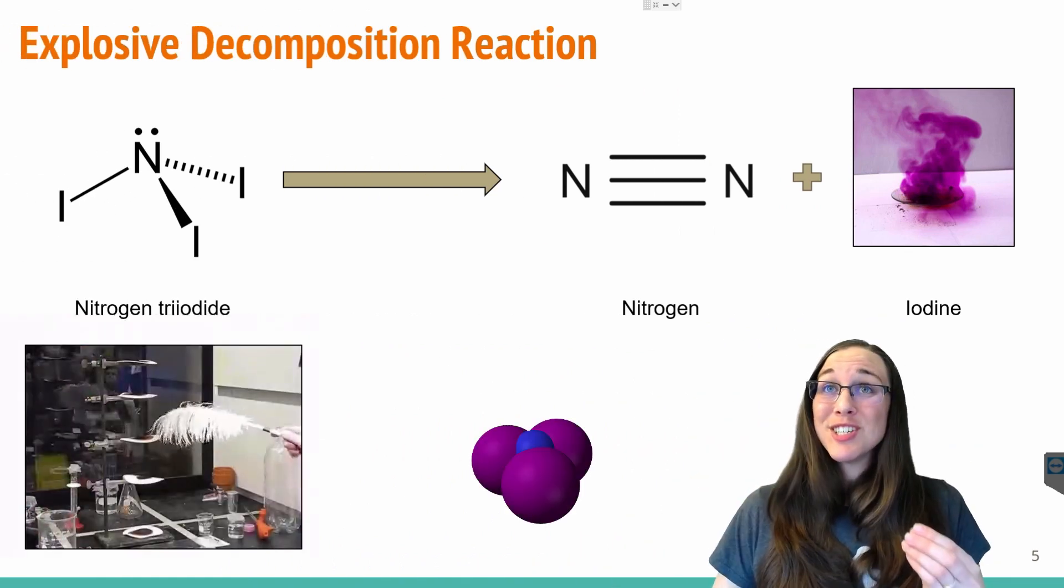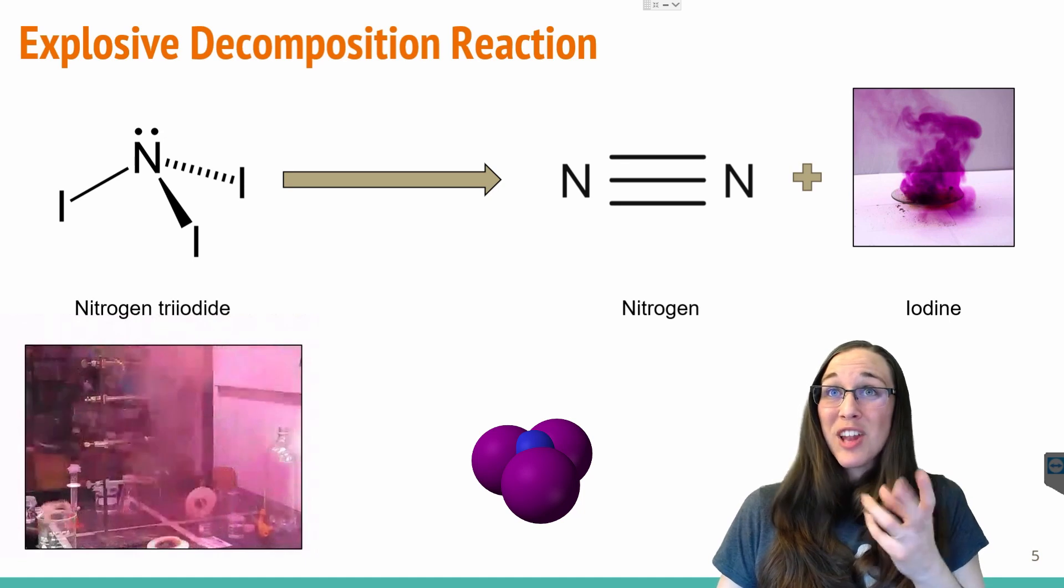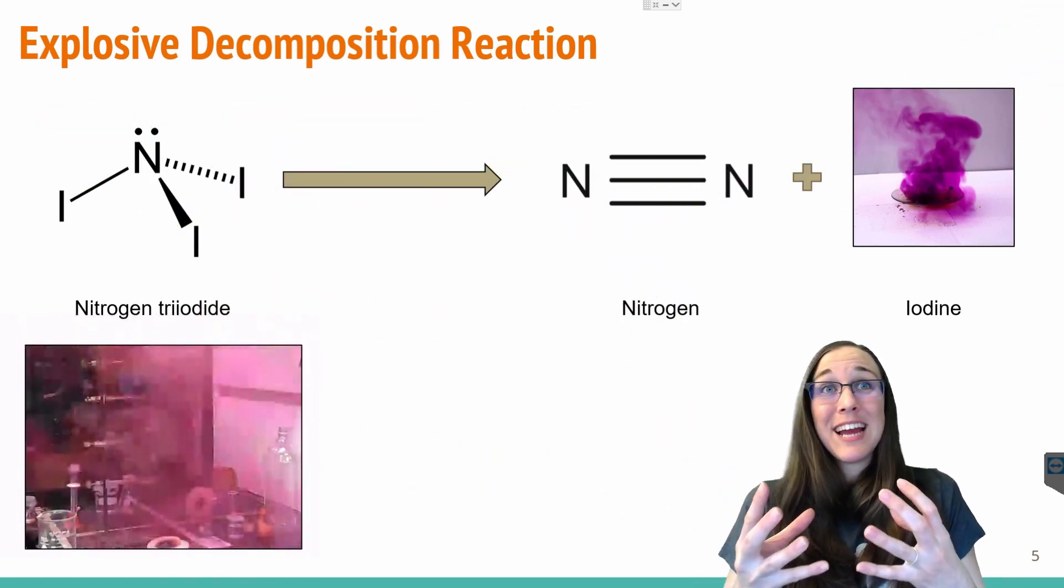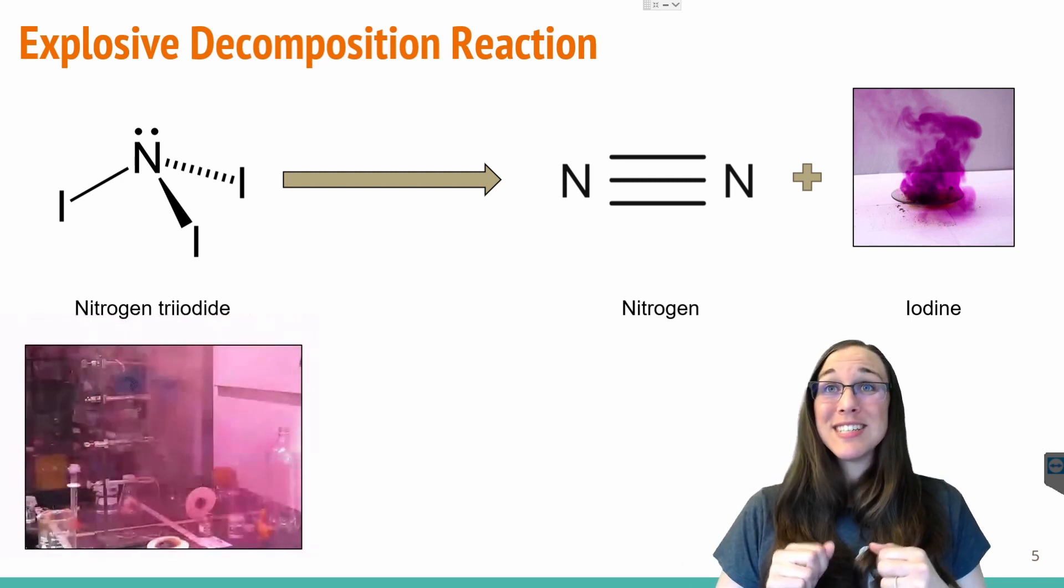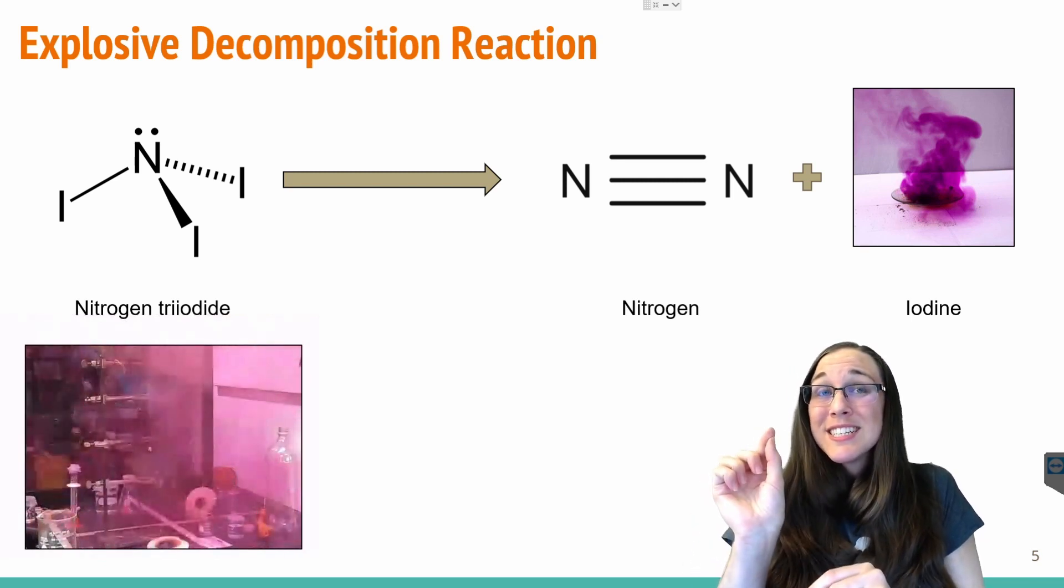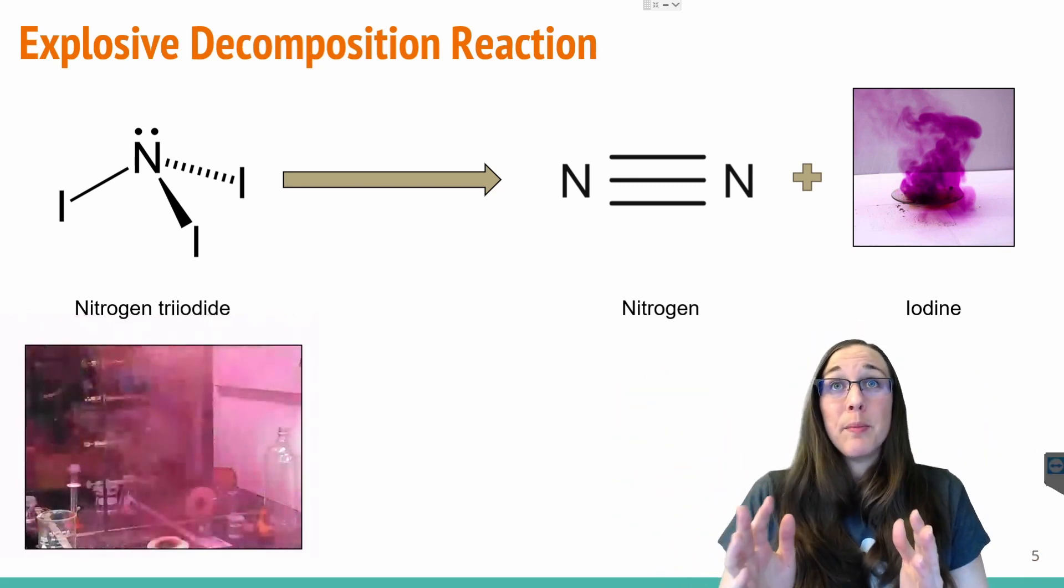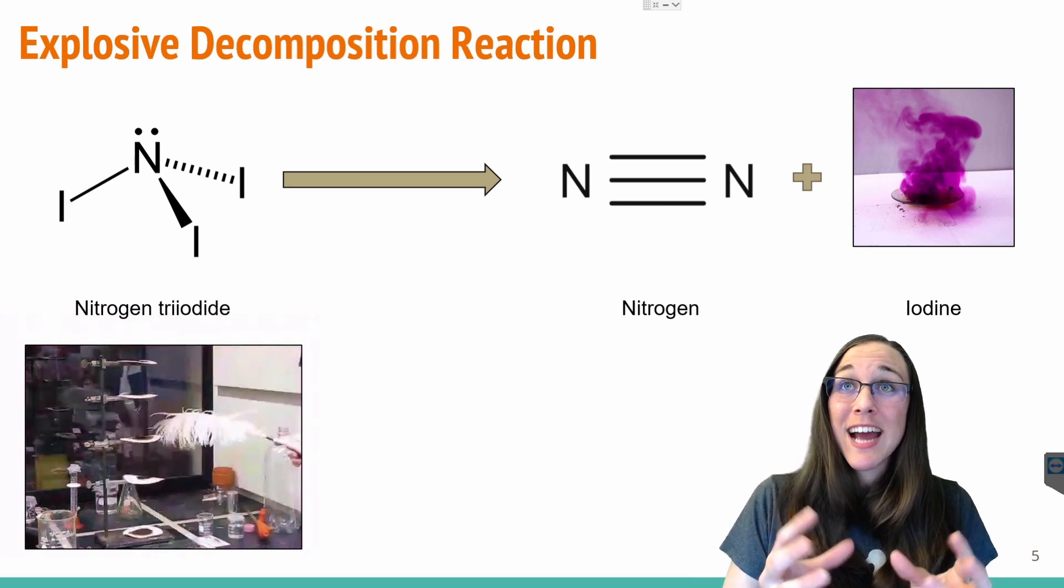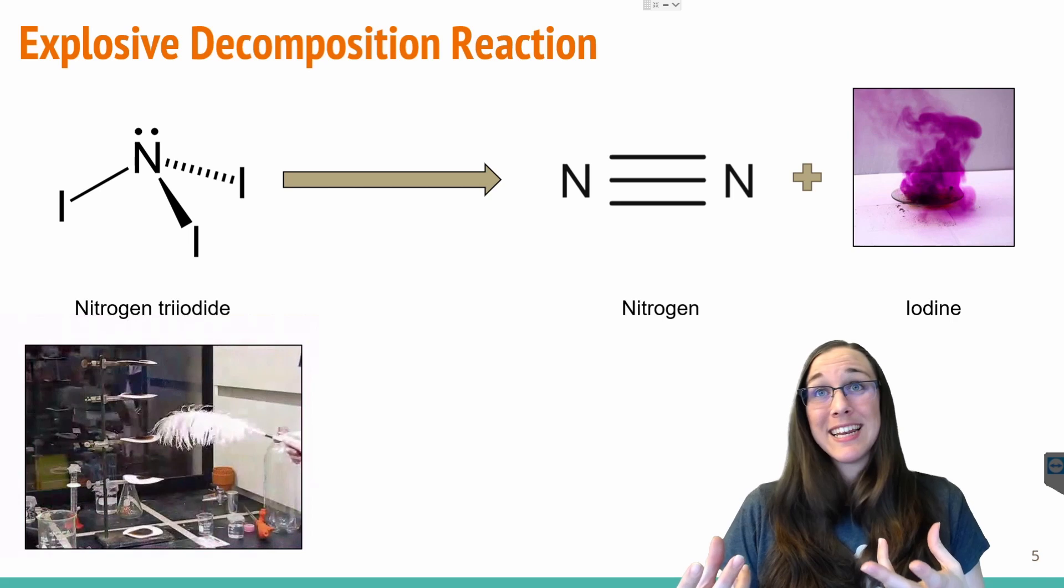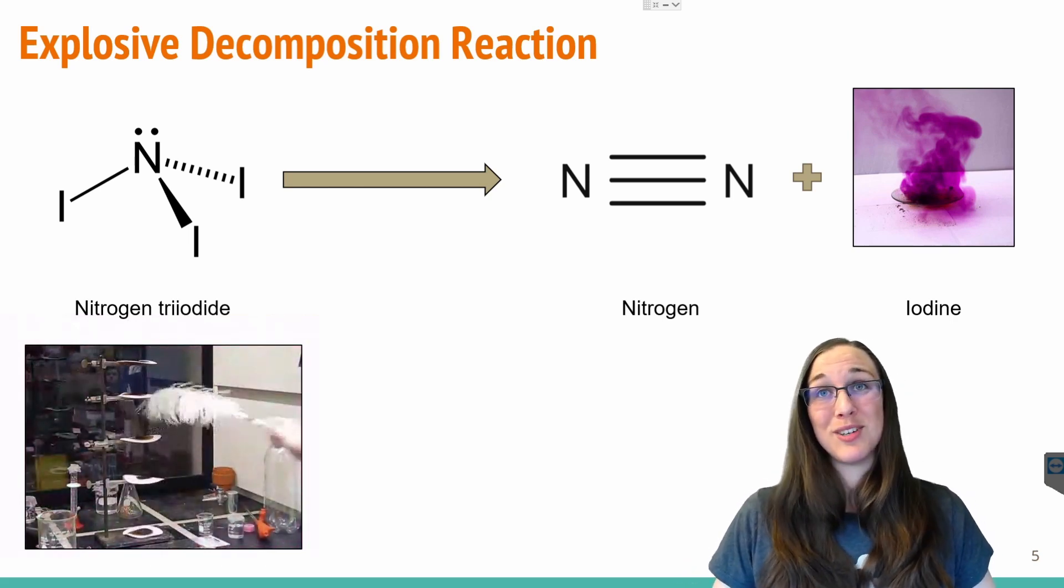So what does this look like? Nitrogen triiodide itself is extremely reactive. Even a fly just gracefully buzzing by would detonate this nitrogen triiodide. So as you can see in the GIF over there, literally that feather barely touches the solid nitrogen triiodide and kabam, it goes boom, and it creates nitrogen gas and iodine gas. So that purple plume of smoke that you see is iodine gas. This is an example of an explosive decomposition reaction.